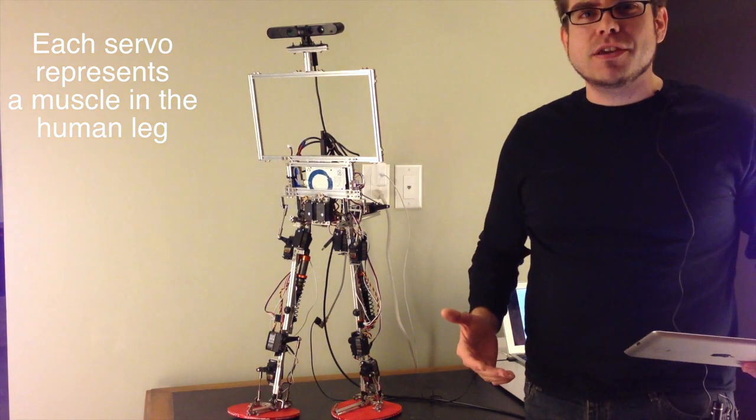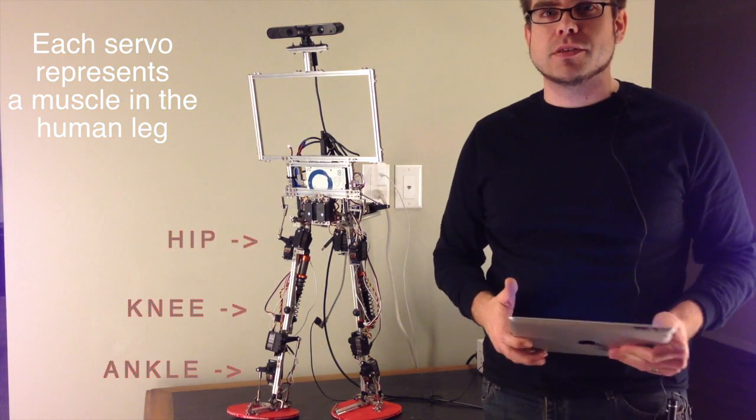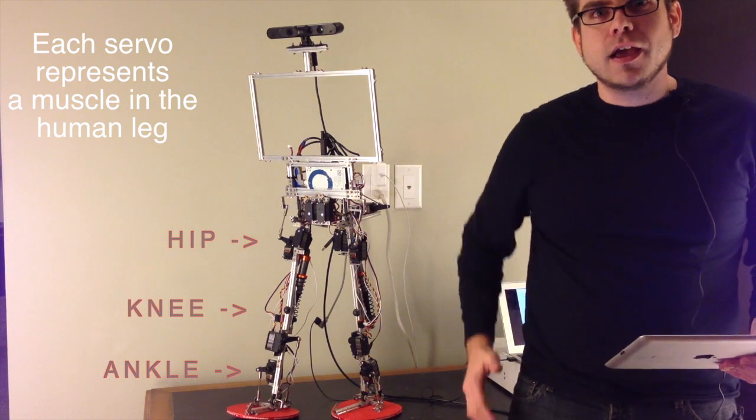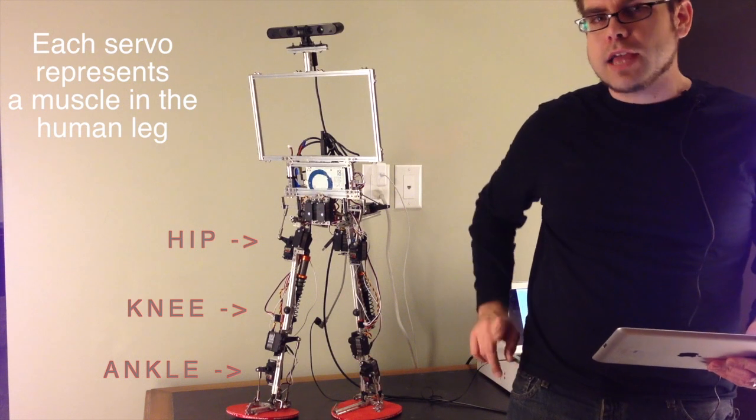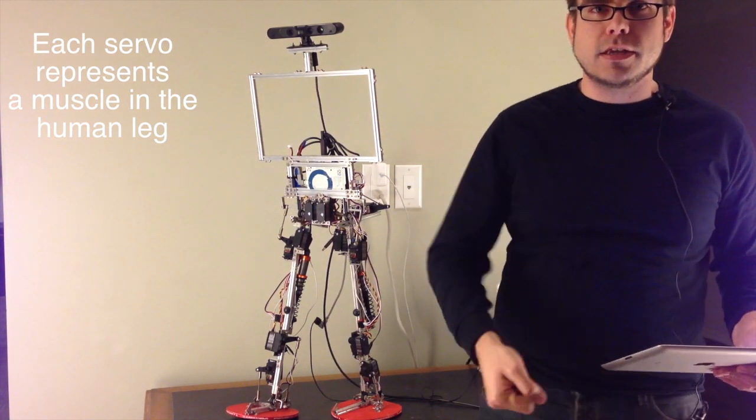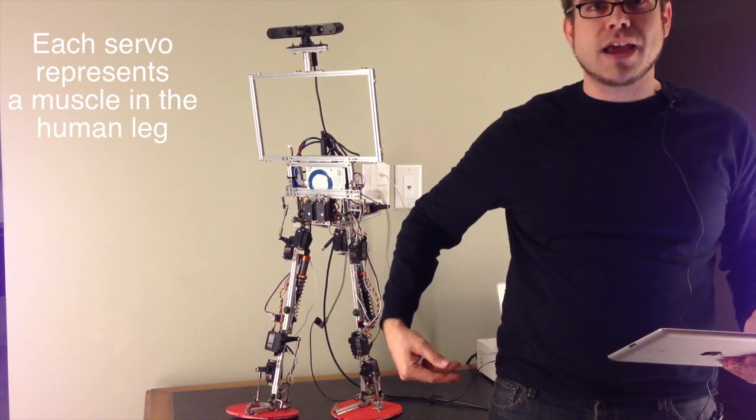So the way that we describe these servos, we define them in terms of muscles. So we have the hip, the knee and the ankle. And each muscle is around the coordinate frame X, Y and Z. So the X coordinate, Y coordinate and Z coordinate, it's the rotation about that coordinate.